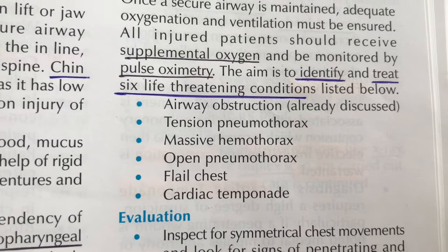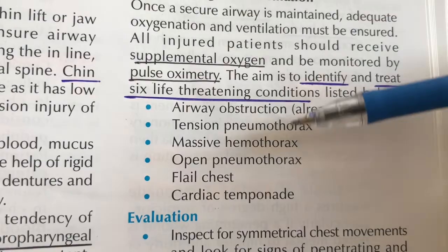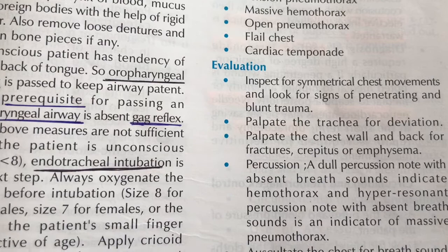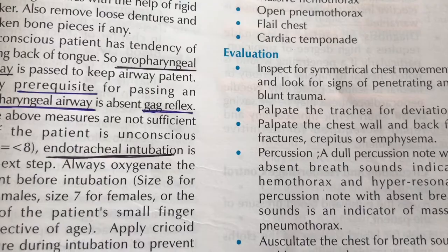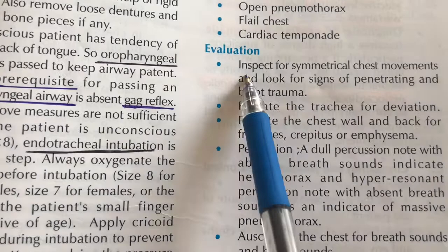These conditions arise when the patient has a blunt injury, stab wound, or firearm injury. We assess breathing and ventilation by inspection, palpation, auscultation, and percussion — in that order. We inspect the chest first.